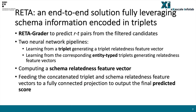To predict the most promising relation-tail pairs from the filtered candidates, we design RetaGrader, a relation-tail pair grader leveraging a newly designed knowledge graph embedding model scoring each candidate relation-tail pair. To achieve this goal, we design two neural network pipelines. On one hand, we learn from a triplet head-relation-tail, generating a triplet relatedness feature vector. On the other hand, we learn from the corresponding entity type triplets, head-type, relation, tail-type, generating one or multiple relatedness feature vectors. Then, we compute a schema relatedness feature vector by taking the minimum value along each feature dimension over these relatedness feature vectors.